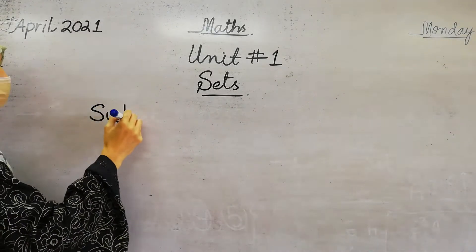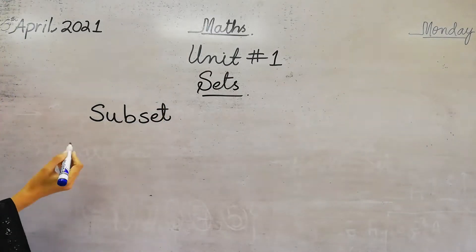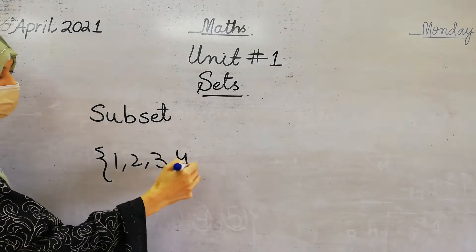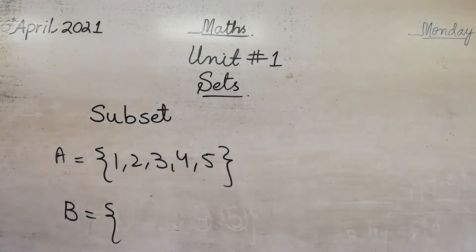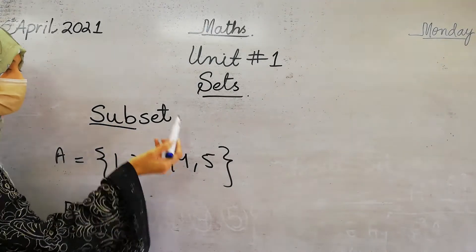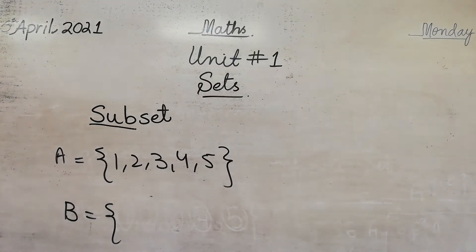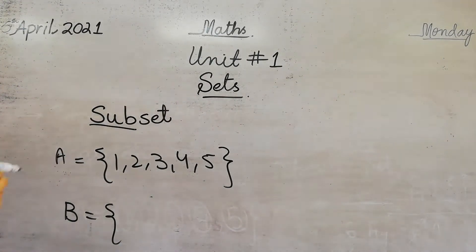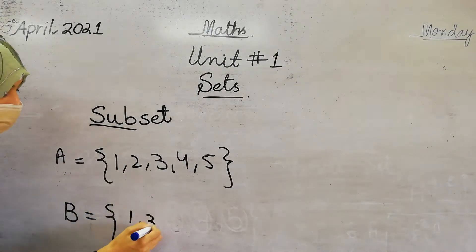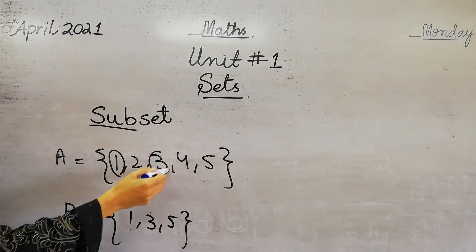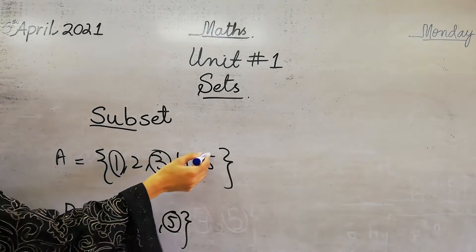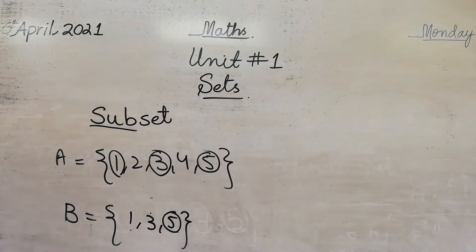Subset means a smaller set. For example, if set A contains 1, 2, 3, 4 and 5, and another set B contains some of the elements of set A — for example, 1, 3 and 5 — then 1 is also a member of set A, 3 is also a member of set A, and 5 is also a member of set A. So set B contains some of the elements of set A.